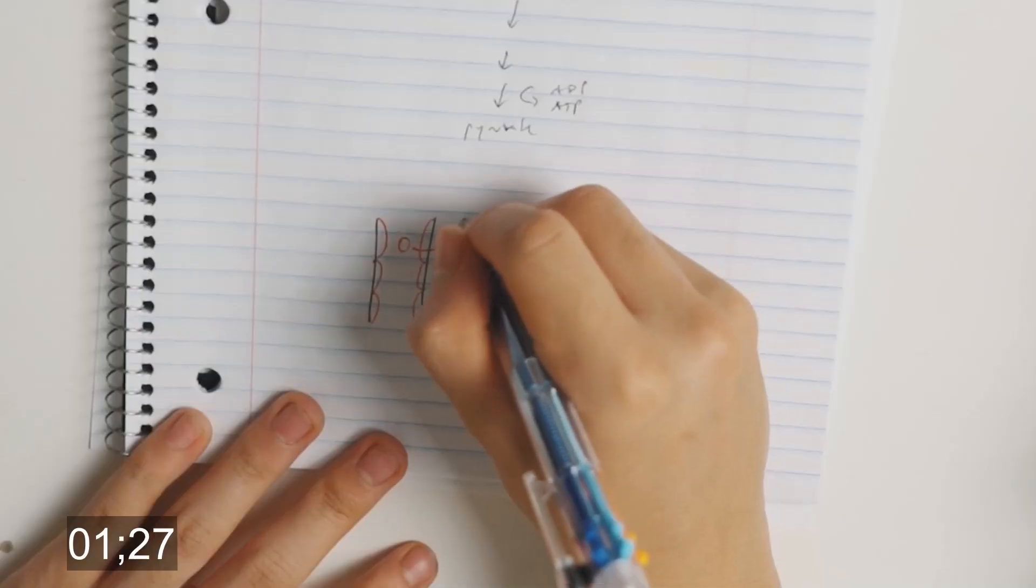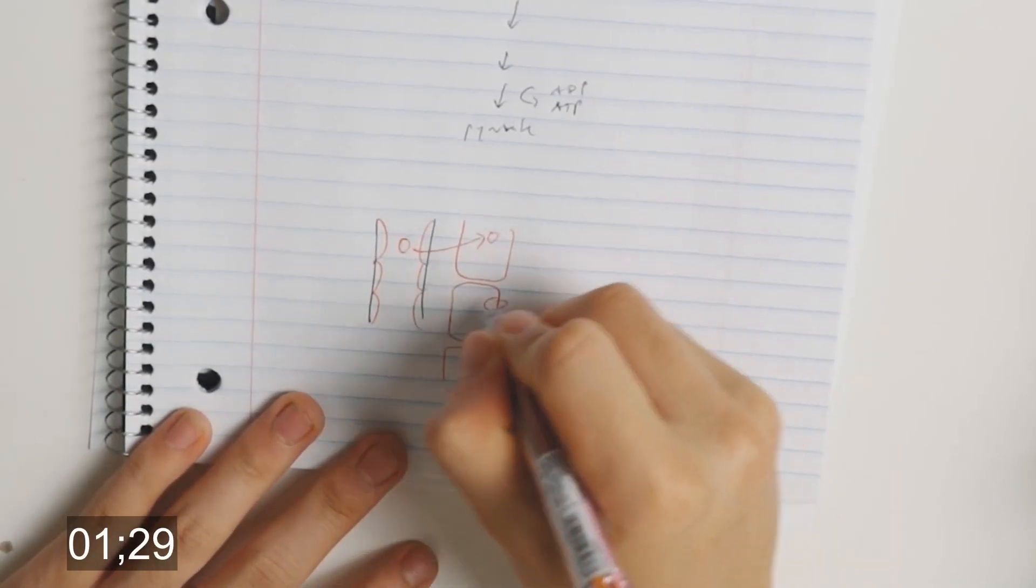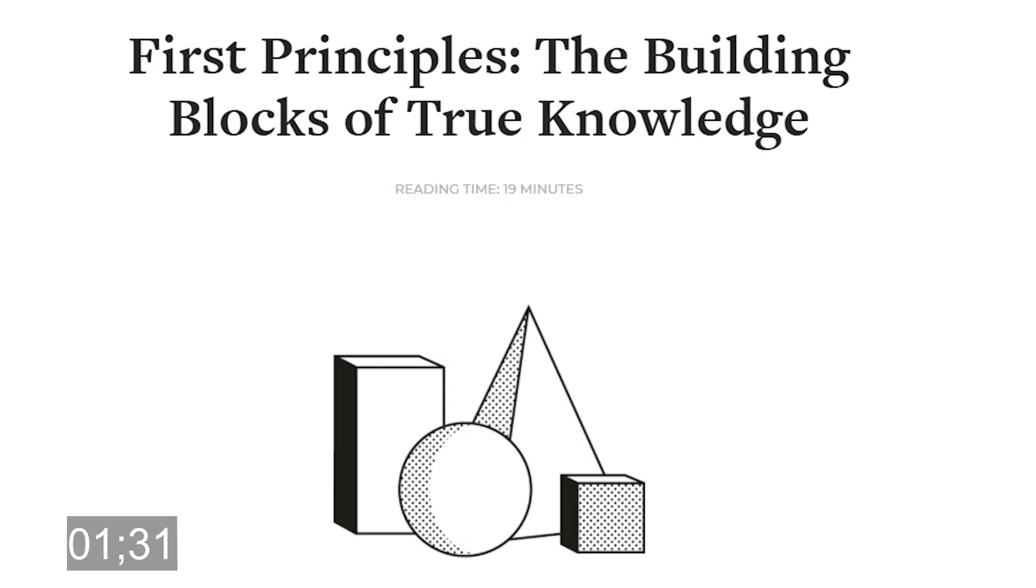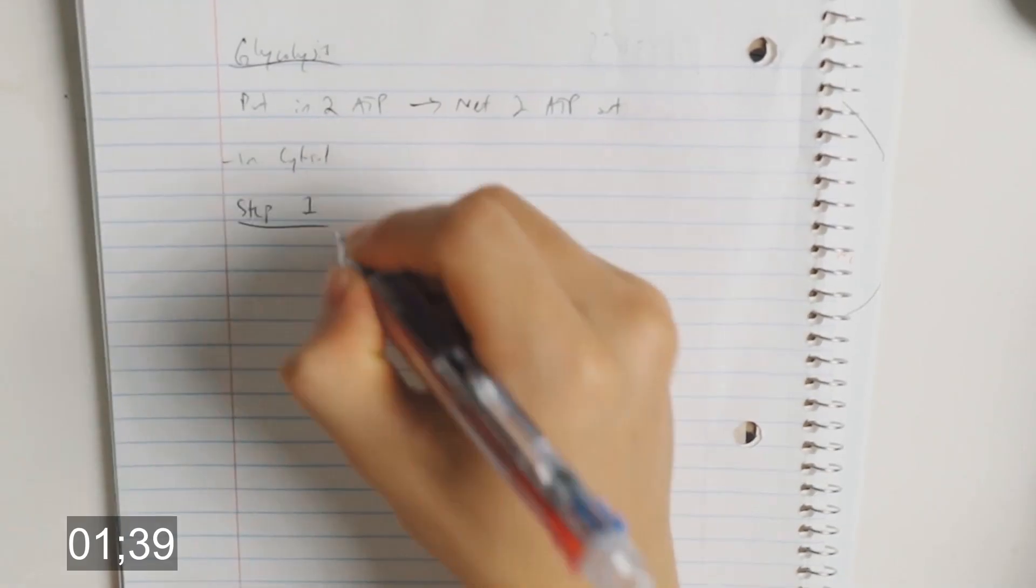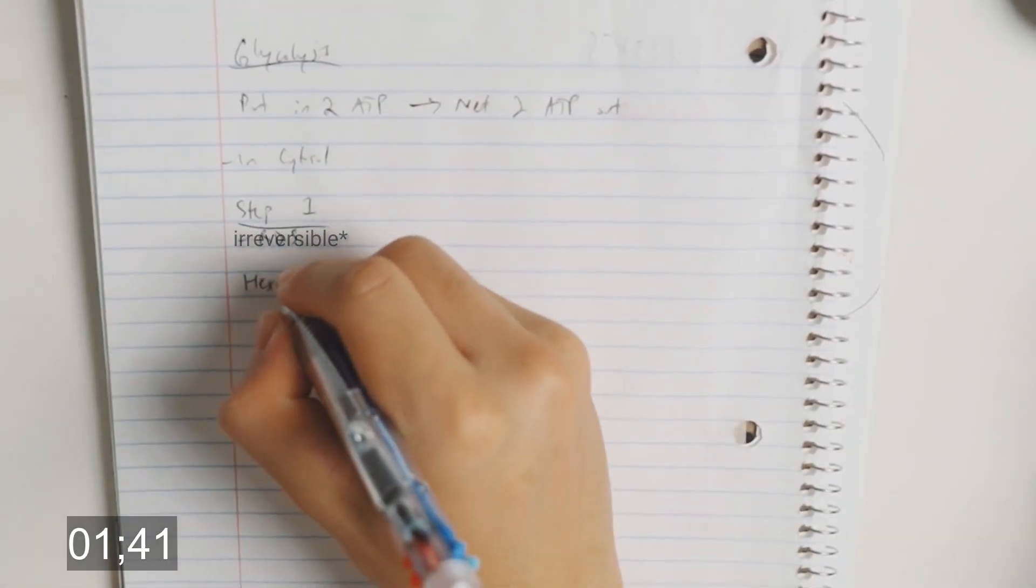Try to keep each small picture topic to its own page. Copy down any useful diagrams or figures, and then after you understand what you've read in first principle terms, meaning in the simplest terms specific to the topic you're learning, write down what you took away from it. For example, for the beginning of the steps of glycolysis, I might just write down like...